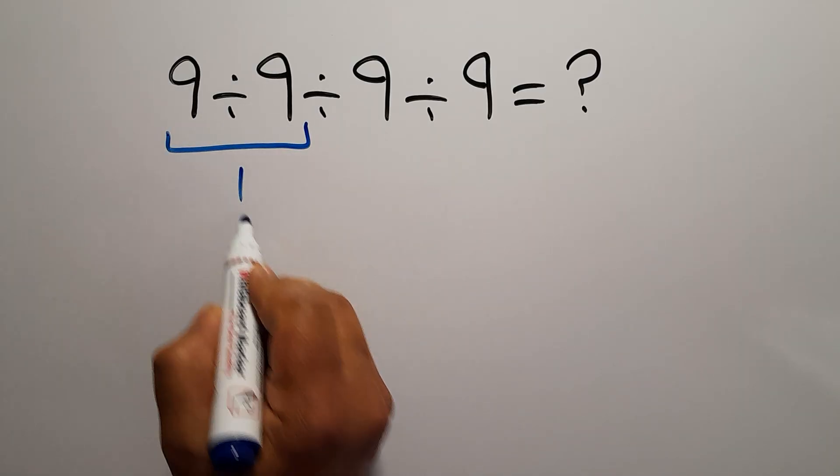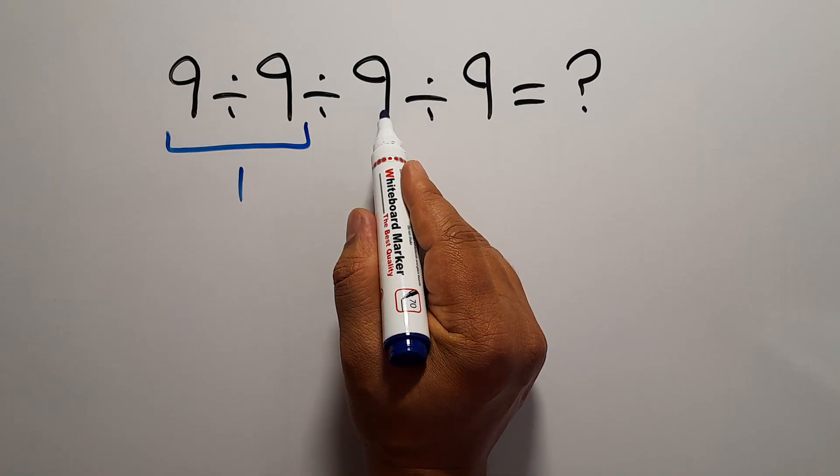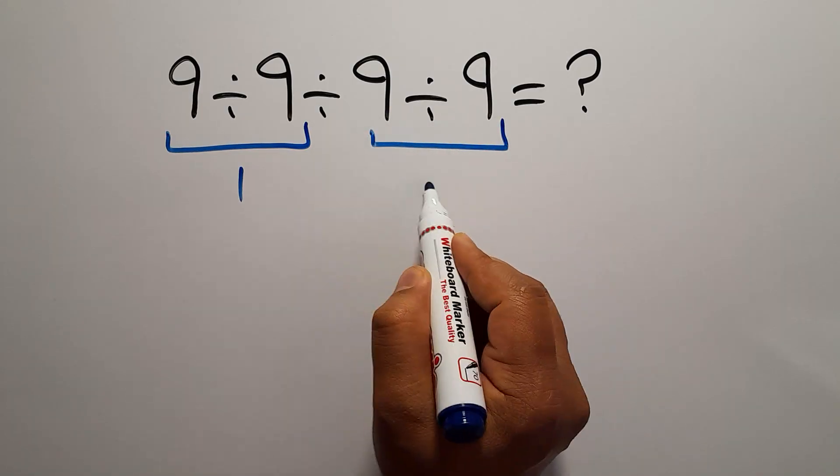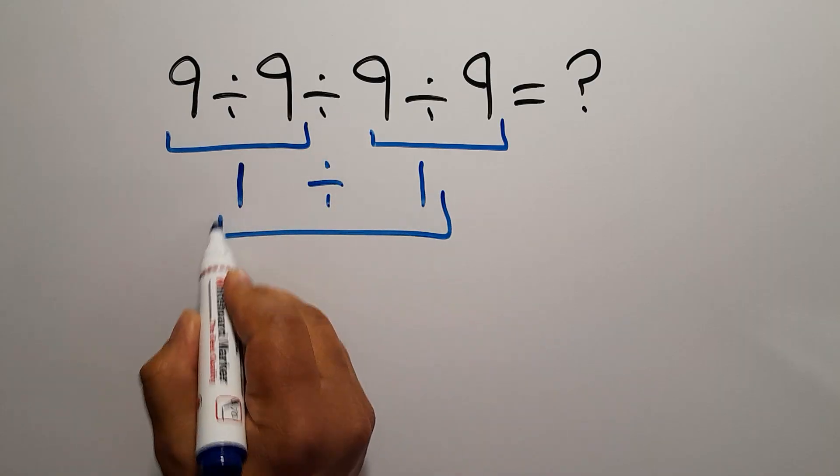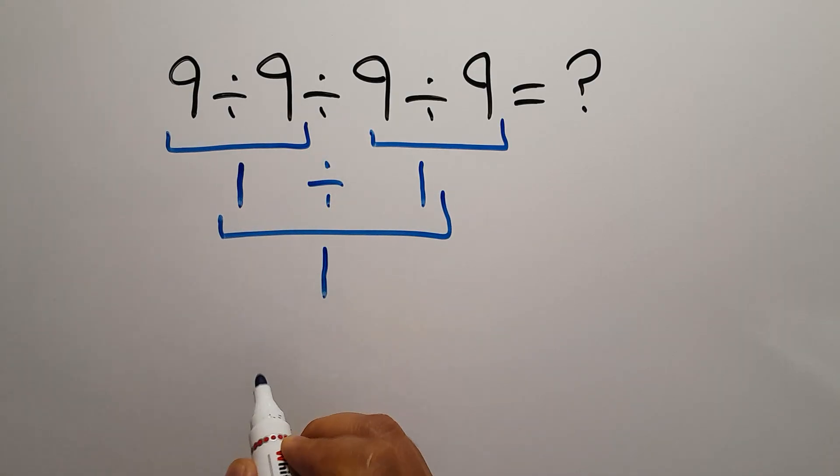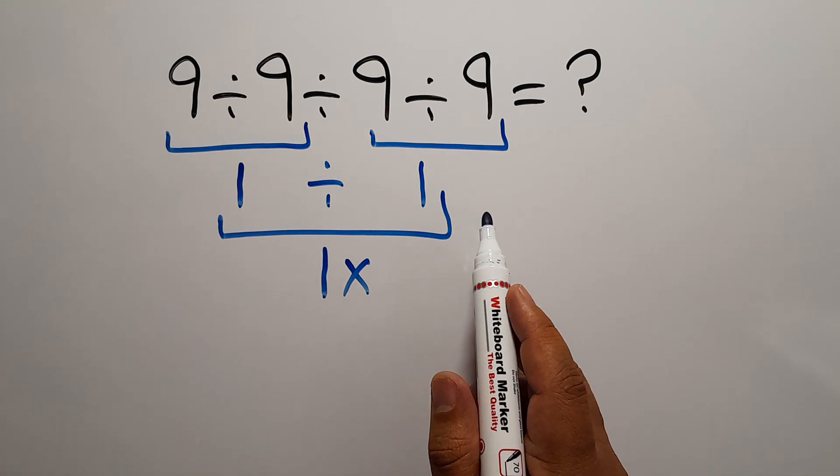9 divided by 9 gives us 1, and again here we have 9 divided by 9 which equals 1, so 1 divided by 1 which gives us just 1. But this answer is not correct because according to the order of operations